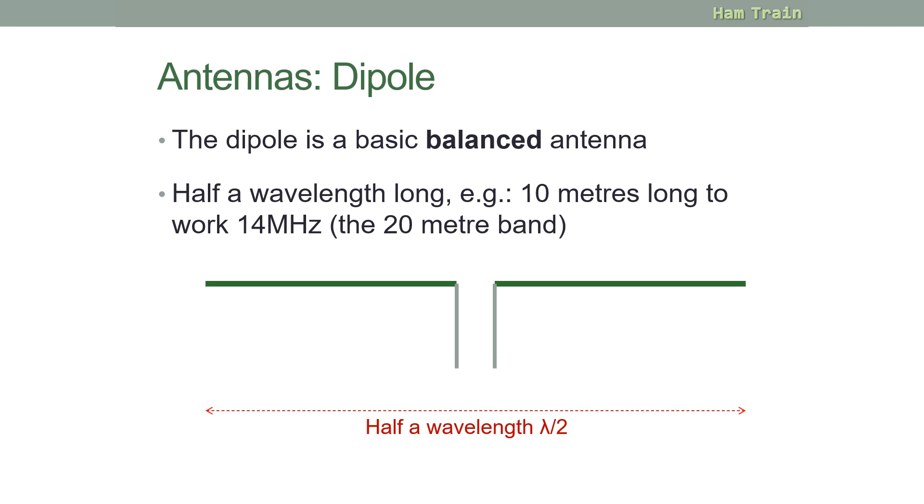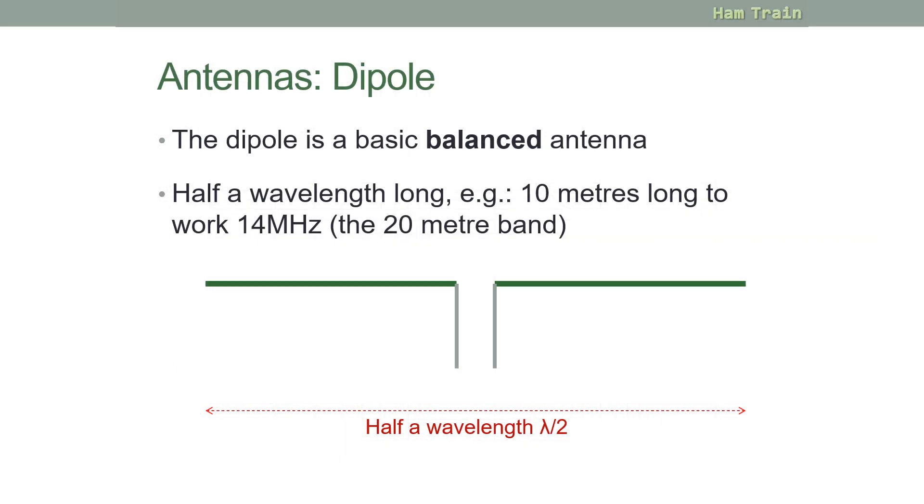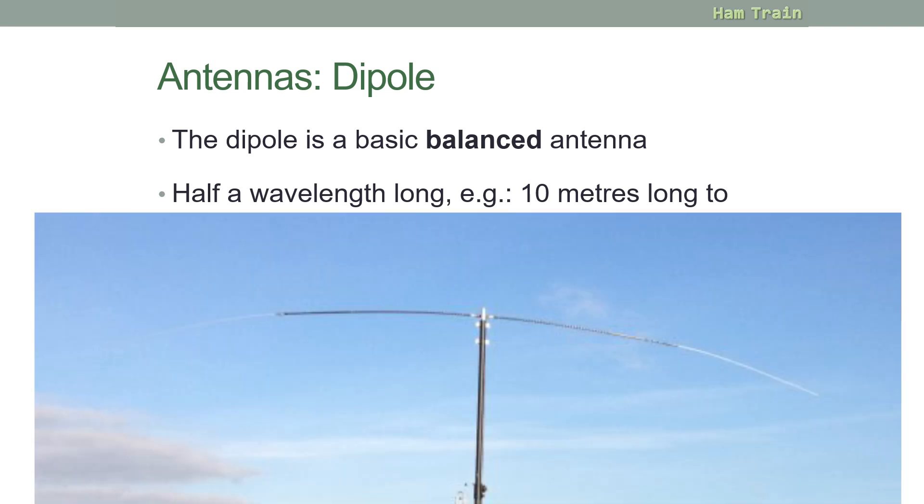So the basic dipole would be half of a wavelength long. So if we wanted to work on 14 megahertz, that would be the 20 meter band. And you can check that from the conversion table that's found in the exam that we've talked about in a previous module. So 14 megahertz would be 20 meters, half a wavelength long, so the entire antenna would be 10 meters long. Effectively, two halves being 5 meters. That's the basic balanced dipole antenna.